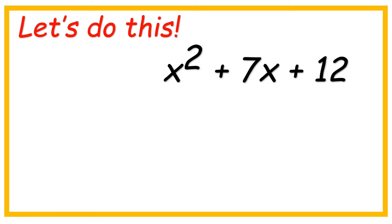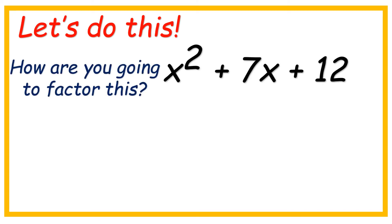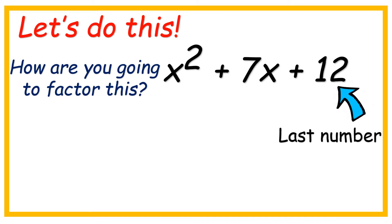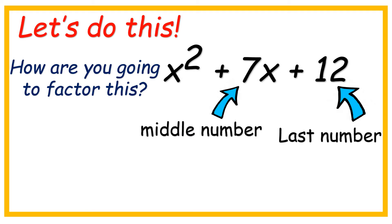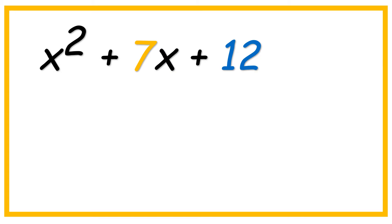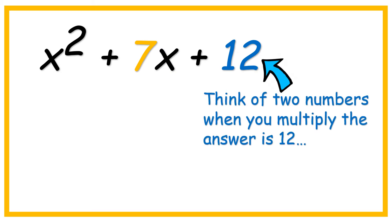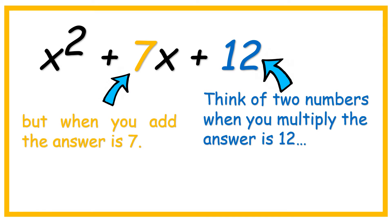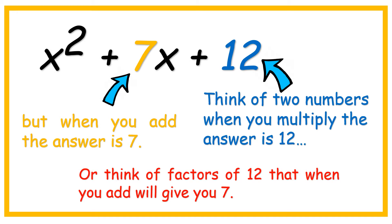x squared plus 7x plus 12. How are you going to factor this? Look at the last number and the middle number. We are going to think of two numbers: when we multiply, the answer is 12, but when we add it, the answer is 7. Or think of factors of 12 that when you add will give you 7.